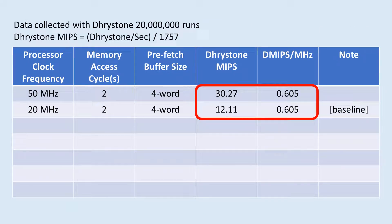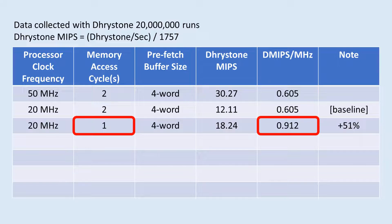Here are the Dhrystone numbers. Processor clock is changed from 50 MHz to 20 MHz, and the memory access is still kept at two cycles. The DMIPS number is lower, but the per-MHz DMIPS stays the same. After memory access is changed from two cycles to one cycle, I got over 50% improvement on the Dhrystone number. This potential improvement would affect all program executions as the general memory access is improved.